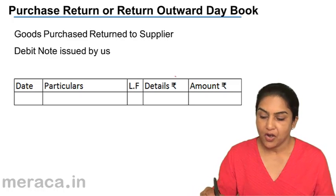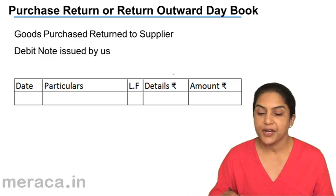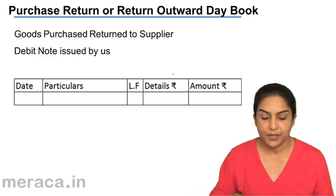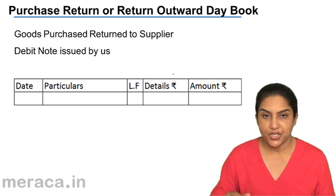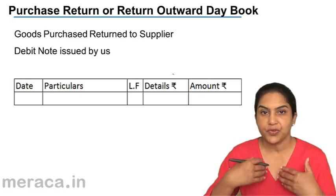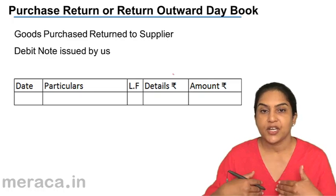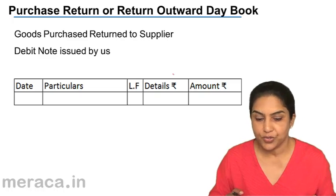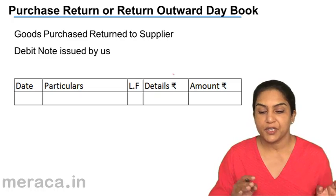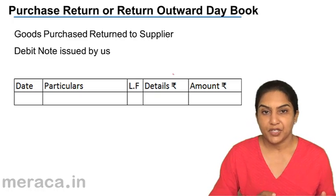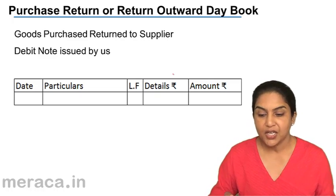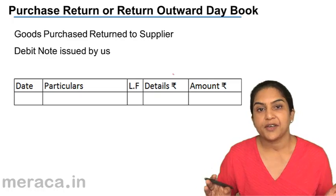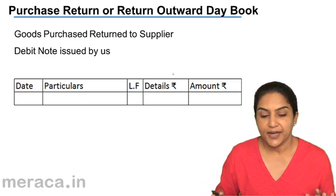Purchase return, or return outward day book. When we purchase goods and return them, it is called return outward. It is also called the purchase return day book, purchase return journal, or return outward journal.